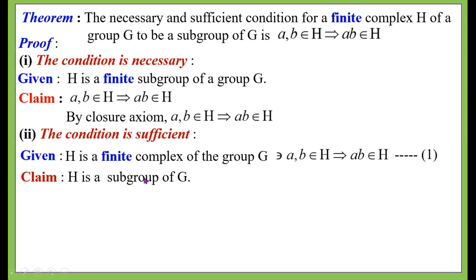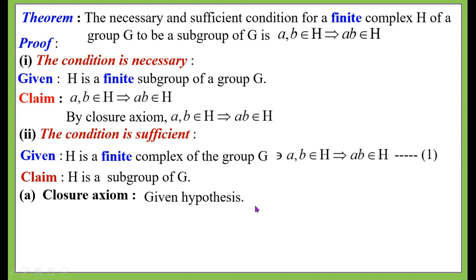Now for the sufficient condition, we have to prove that H is a subgroup of G, meaning H must satisfy four axioms: closure, associativity, identity, and inverse. Since the hypothesis states a, b ∈ H implies a·b ∈ H, that is precisely the closure axiom. Hence the closure axiom is proved by the given hypothesis.